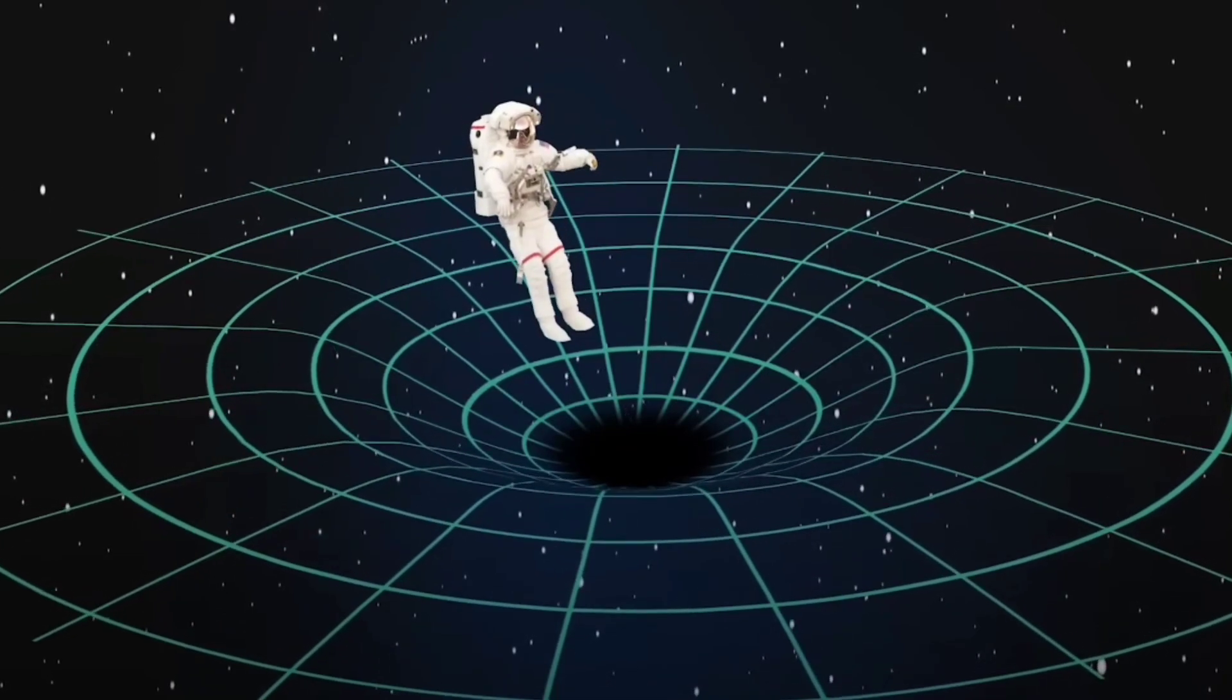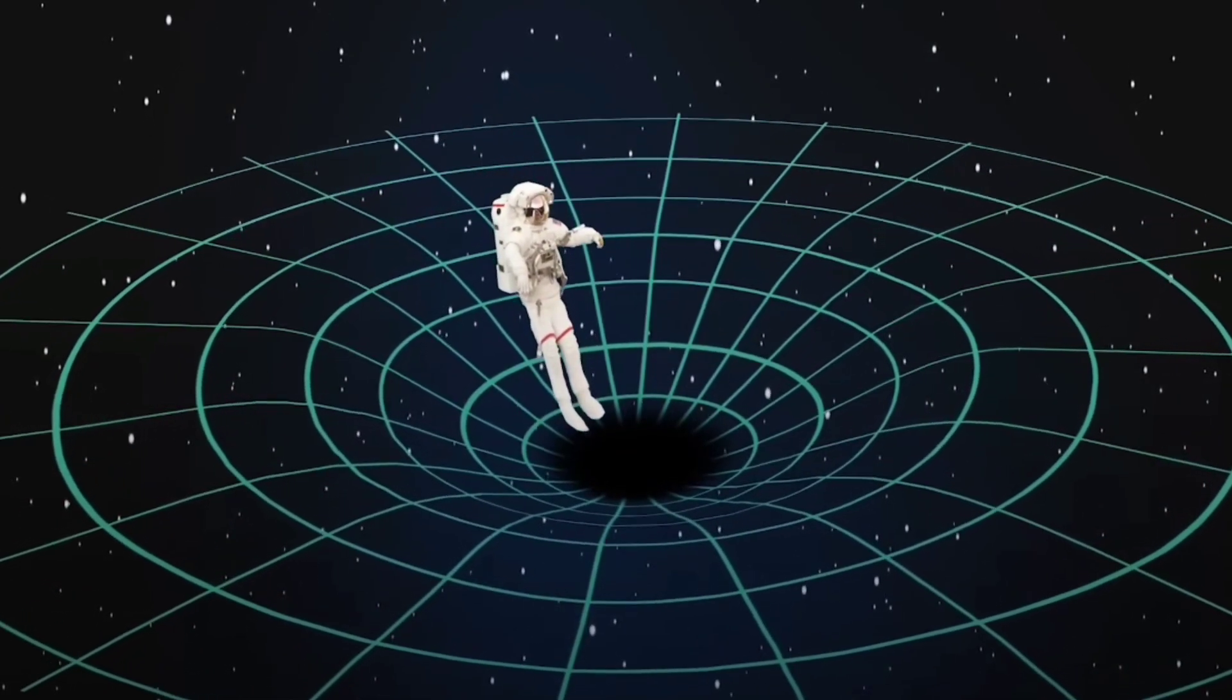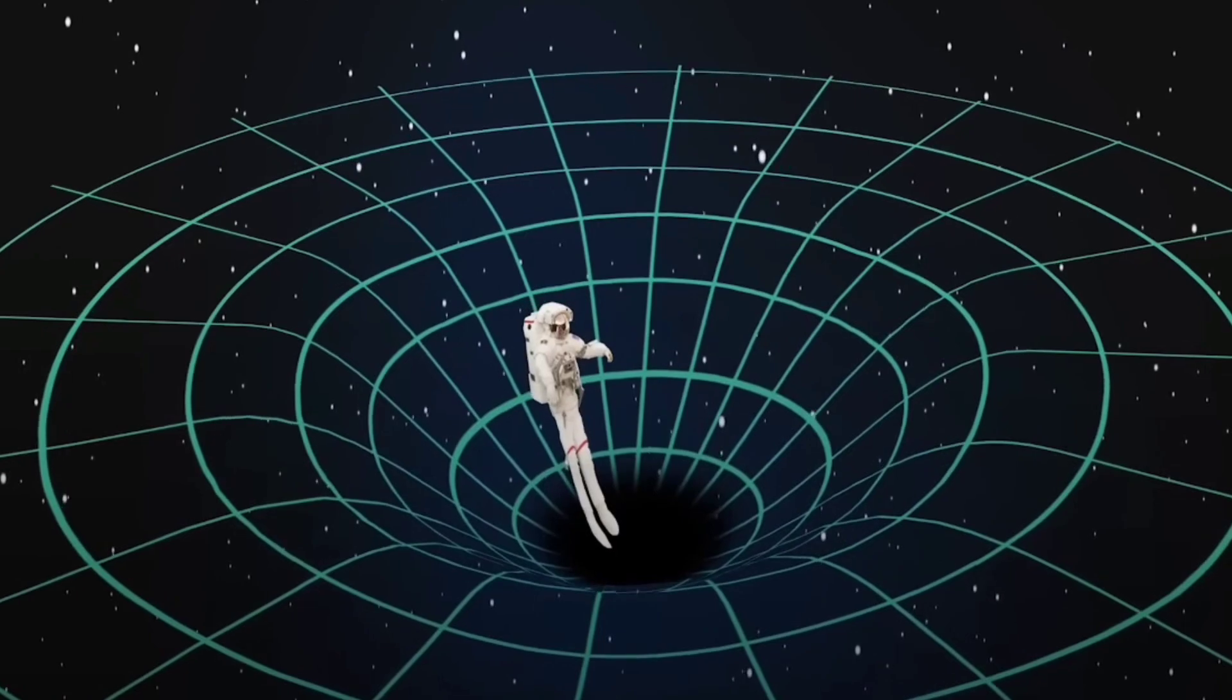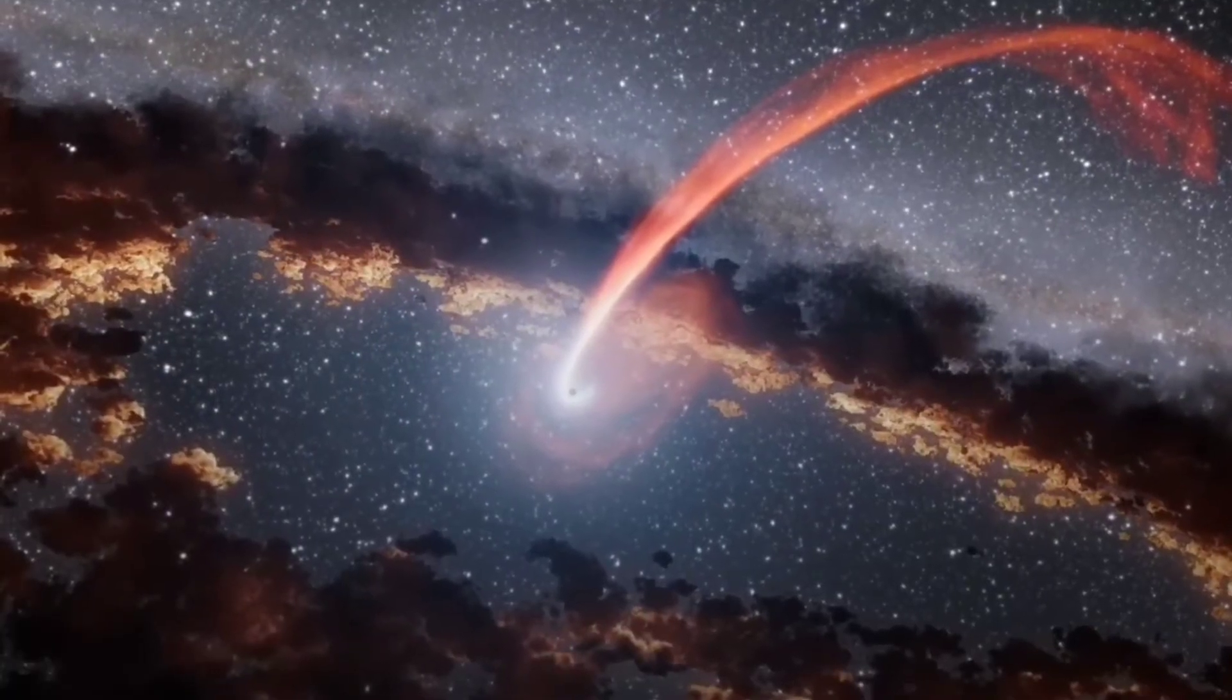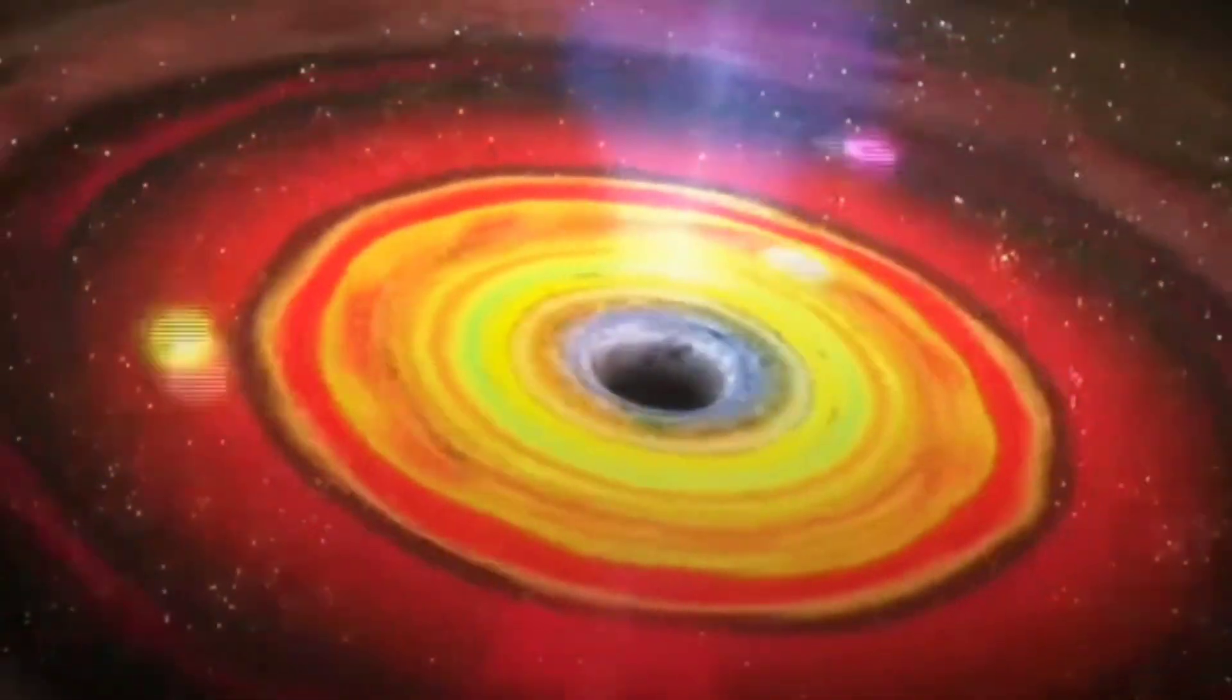The gravity at a black hole center is so intense that not even light can escape, making them invisible. But we can still detect their presence by the gamma ray bursts and gravitational waves they produce.